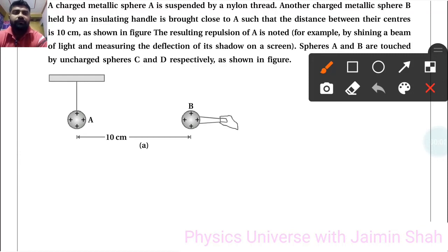Now question is a charged metallic sphere A is suspended by a nylon thread. Another charged metallic sphere B held by an insulating handle is brought close to A such that the distance between their centers is 10 cm as shown in figure.